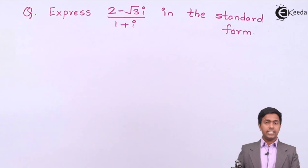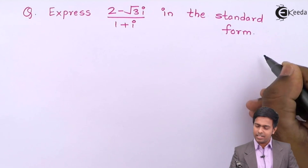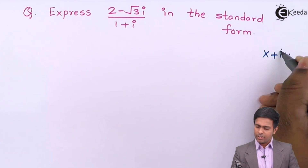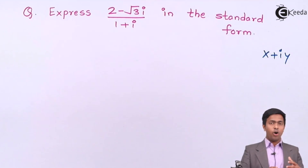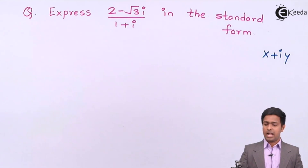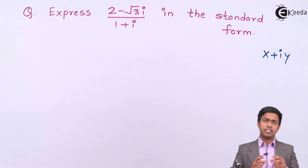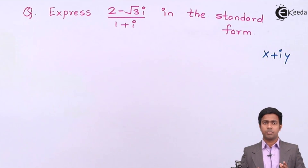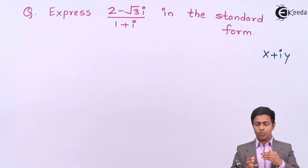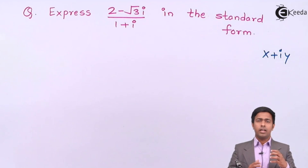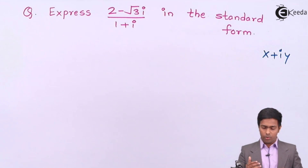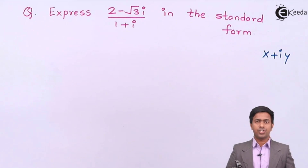The standard form is nothing but x + iy — a form in which we have only one real part and one imaginary part is called the standard form of a complex number. So it means we have to convert the given number into one real and one imaginary part format.